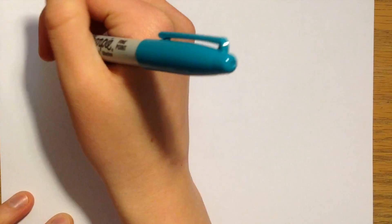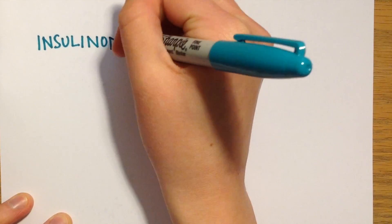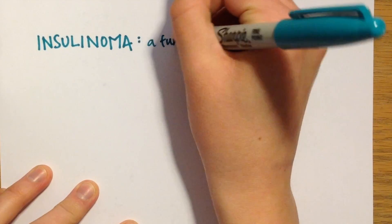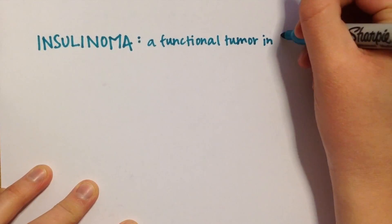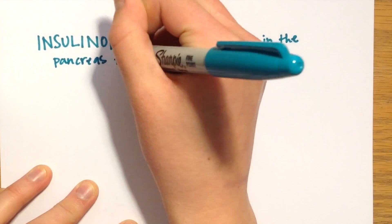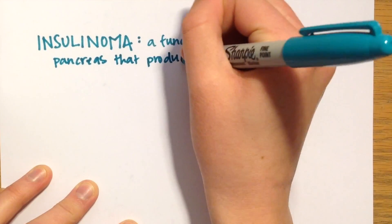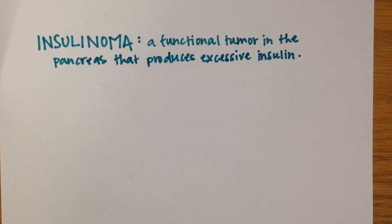We're now going to go through some practice problems to test your knowledge on these hormones. Insulinoma is a disorder characterized by a functional tumor in the pancreas which produces excess insulin. Since insulin is high, glucose is low in patients with this disorder. What would the levels of ACTH, cortisol, and growth hormone be?